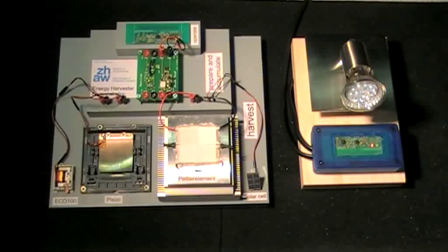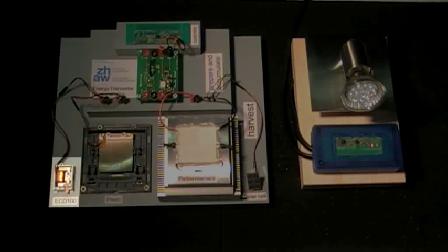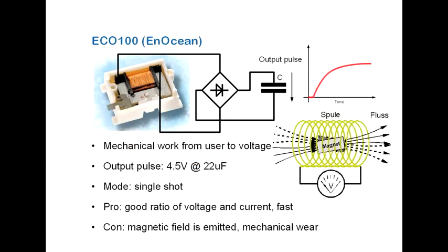Now all four harvesters are presented in action. Let's have a close look at the ECO100. As said, it uses mechanical work from the user to generate an output voltage. It works in single-shot mode, which means there is energy only when there is an event, the user pushing the switch.